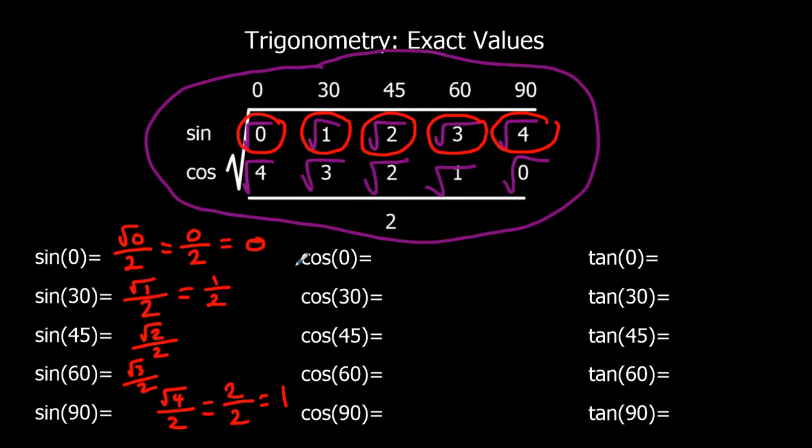Now let's look at cos. Cos 0, where cos meets 0 here, is root 4 over 2. Root 4, same as sin 90, is 2. So we've got 2 over 2, which is 1.